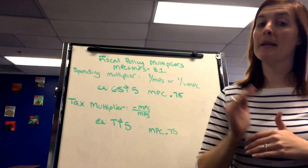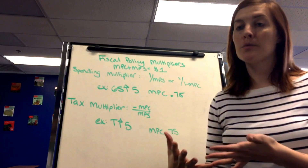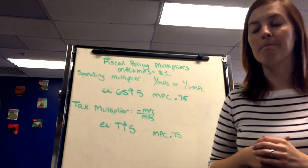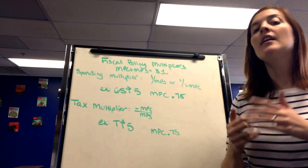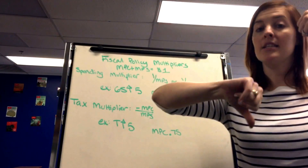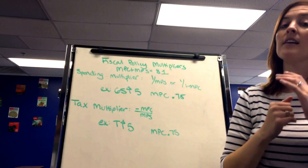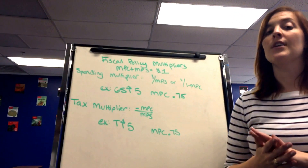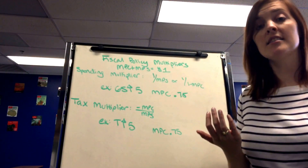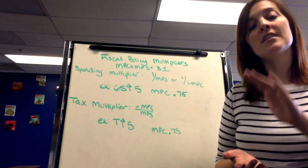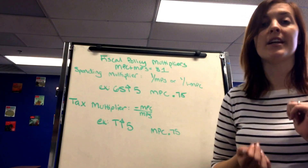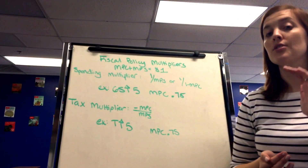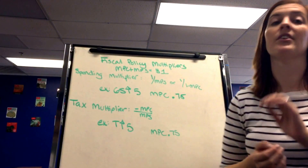In a recession, the government uses expansionary fiscal policy by increasing spending and decreasing taxes. Their goal is to increase the C component of GDP. Contractionary fiscal policy is used to fight inflation by raising taxes and decreasing spending, thereby decreasing GDP. Expansionary fiscal policy always creates a budget deficit, while contractionary fiscal policy creates a budget surplus — these are very important keywords.